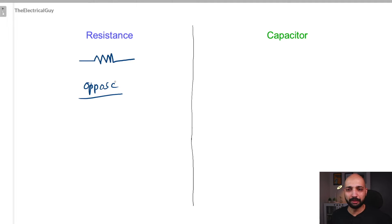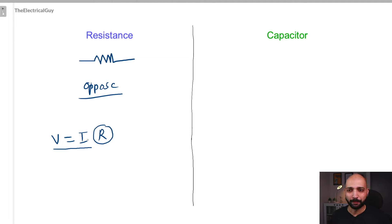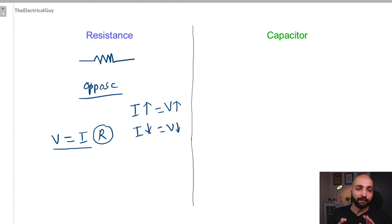What does that mean? It takes us back to Ohm's law, which tells us that voltage is directly proportional to the current, provided your resistance is constant. Considering the resistance is constant, your voltage is directly proportional to the current. So when current flowing through a resistor is maximum, your voltage will also be maximum. When current flowing through a resistor is low or zero, the voltage across it will also be very low. That is the reason why voltage and current waveforms in a resistive circuit are perfectly in sync with each other.